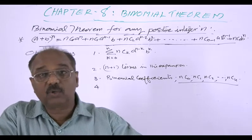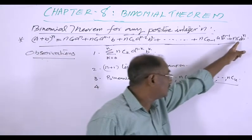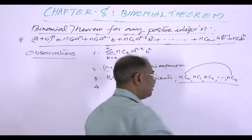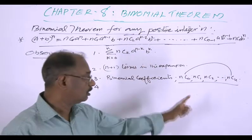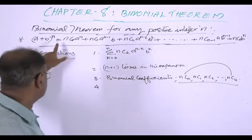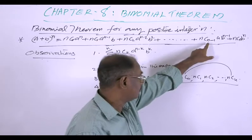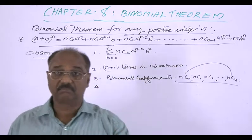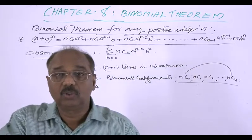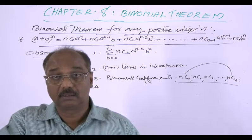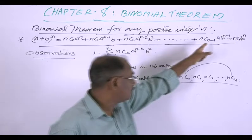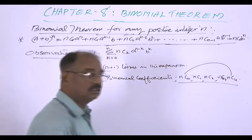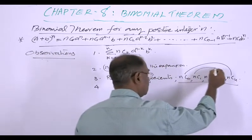The fourth observation: the first and last coefficients are the same — nC0 = nCn = 1. Also, the second and second-to-last (last but one) coefficients are equal: nC1 = nC(n-1). So the second and last but one are the same.